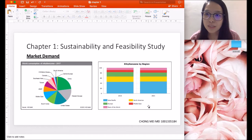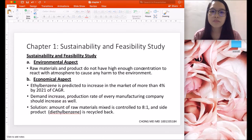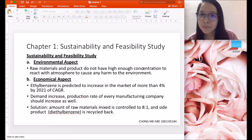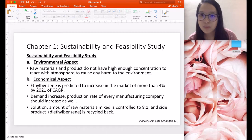In 2021, they predict that Asia-Pacific is the top region to consume and produce the highest ethyl benzene. In the environmental aspect of the sustainability study, the raw material benzene and ethylene and the product ethyl benzene do not have enough concentration to react with the atmosphere in causing harm to the environment.